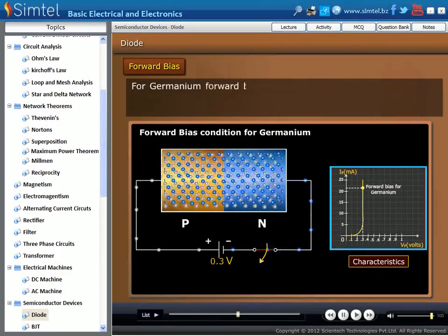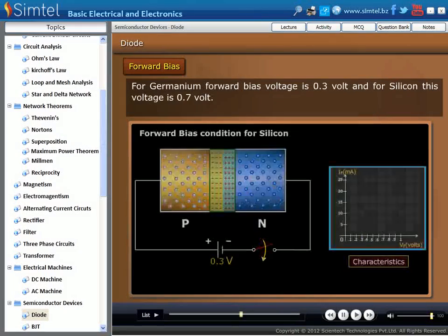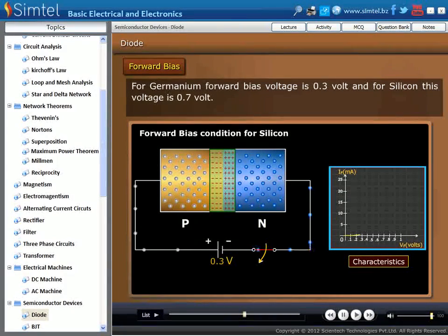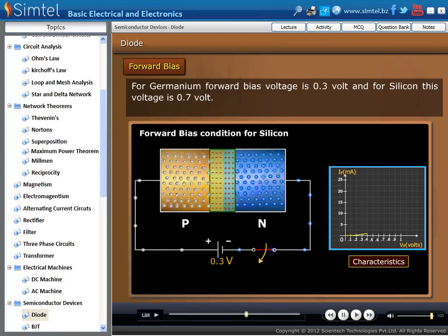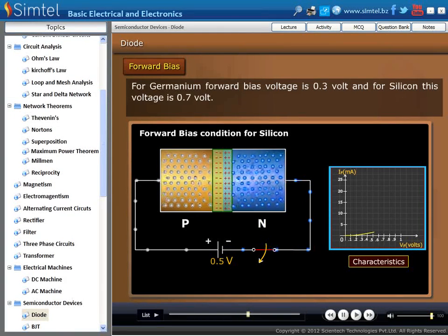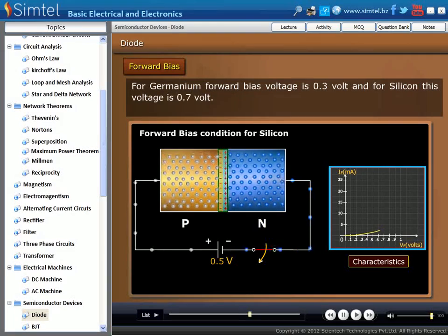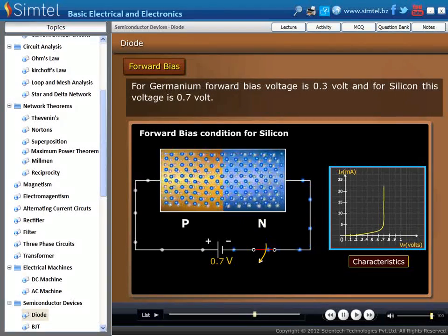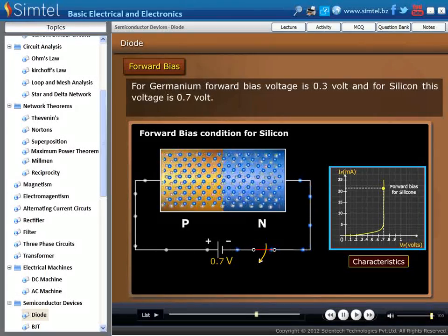For germanium, this forward bias voltage is 0.3 volt, and for silicon it is 0.7 volt. At this voltage range, P-N junction diode is said to be in forward bias condition, and it acts as a switch.